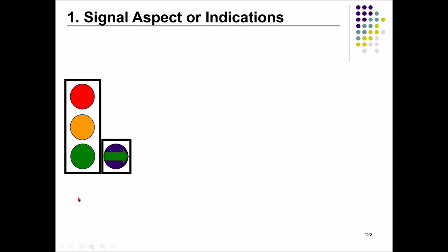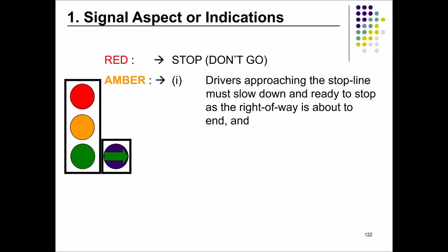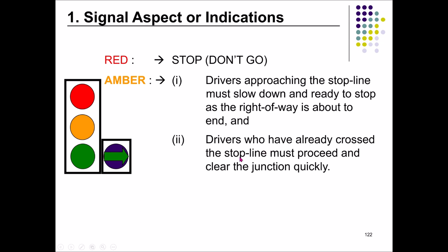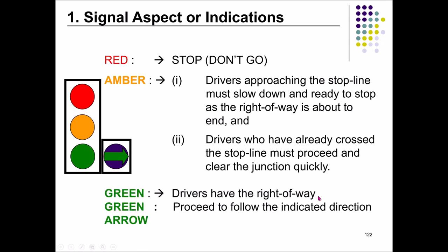Traffic signals have three colors: green, amber or yellow, and red. Sometimes for the green color it also has a green arrow to show the direction. Red means stop — do not cross the stop line. Amber has two conditions: if you are approaching the stop line, you have to slow down and ready to stop as the right of way is about to end; if you have already crossed the stop line, you just proceed and clear the junction quickly. Green or green arrow shows the driver has the right of way to proceed in the indicated direction.